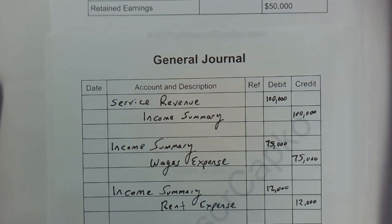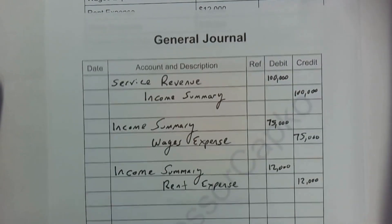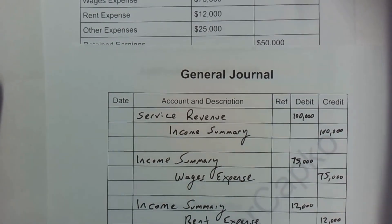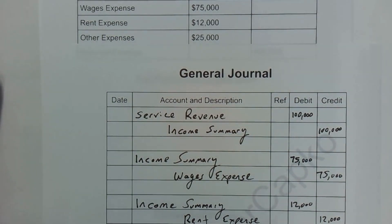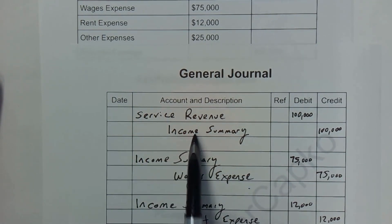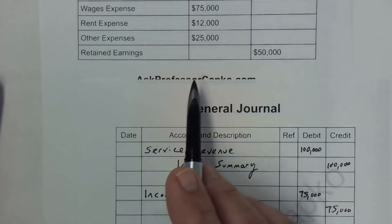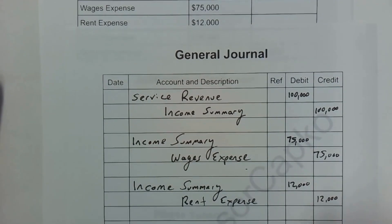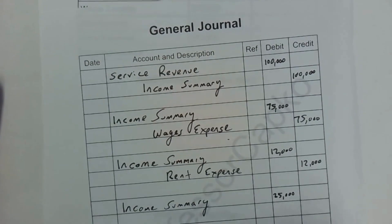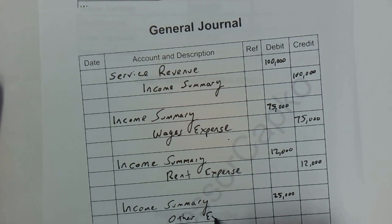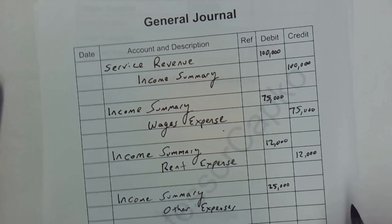Finally, I've lumped everything else into other expenses and we're going to go ahead and take care of that account as well — that's for twenty-five thousand. So I'm going to debit income summary. For each of these transactions we could have a description here — it's probably a good idea, for example writing 'closing out income summary' or 'closing out wages expense' — but just to save time I'm not going to put that in here. Income summary is debited for the twenty-five thousand of other expenses, and we're going to credit other expenses for twenty-five thousand.